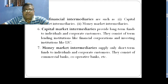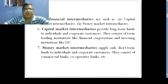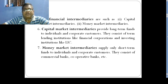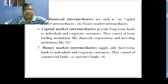Financial Intermediaries are divided into two: Capital Market Intermediaries and Money Market Intermediaries. Capital Market Intermediaries are related to long-term funds for individual and corporate customers — for example, financial corporations. Money Market Intermediaries are related to short-term funds for individual and corporate customers — for example, commercial banks and cooperative banks. Development banks are related to Capital Market Intermediaries, while short-term or smaller fund-raising activities fall under Money Market Intermediaries.